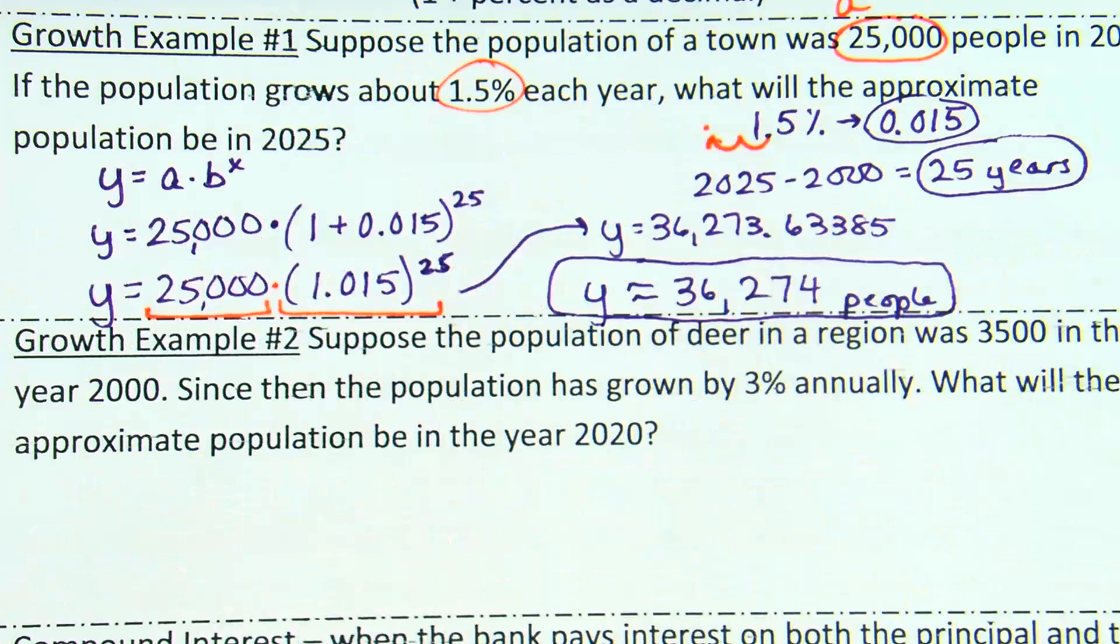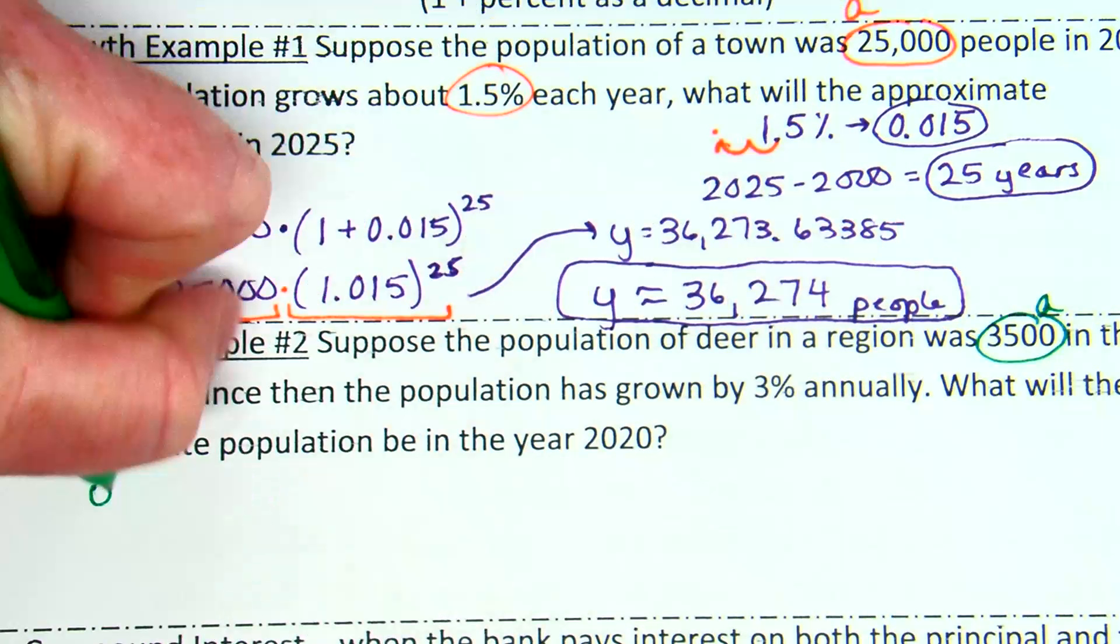Try the second one. Suppose the population of deer in a region was 3,500 in the year 2000. Since then, the population has grown by 3% annually. What will the approximate population be in the year 2020? Okay. Thoughts on what you know? Okay. And what's that going to go in for?